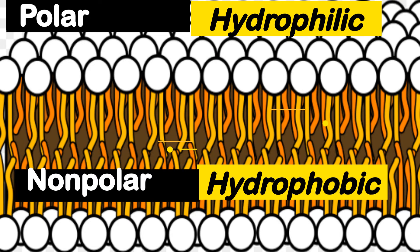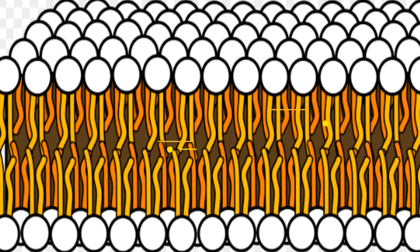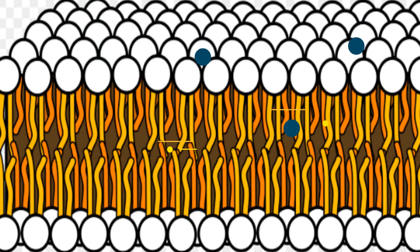The tails point inward and the heads point outward. Smaller objects like oxygen and water can pass through the cell membrane. This occurs through diffusion or osmosis, which is a type of passive transport.